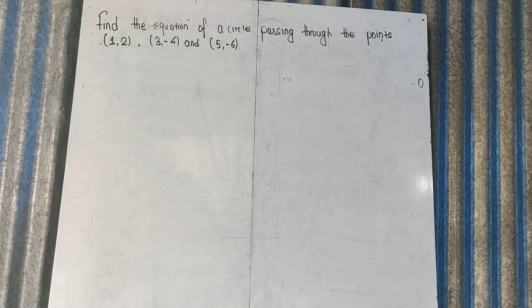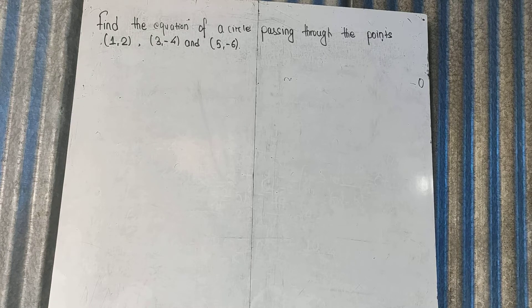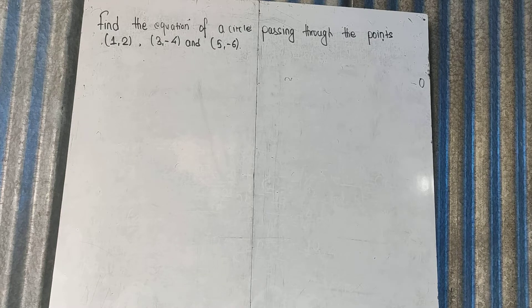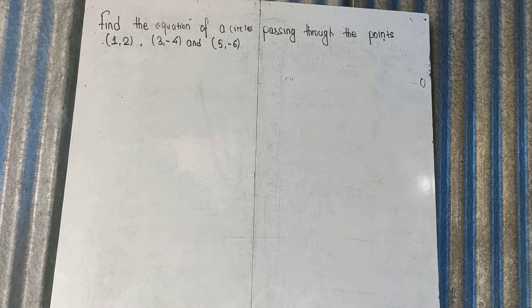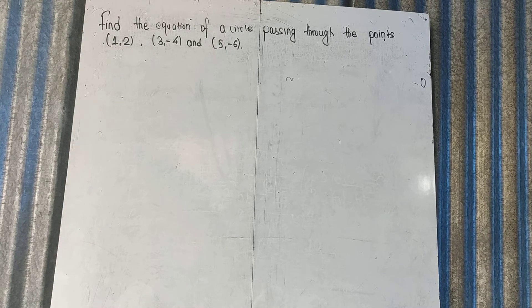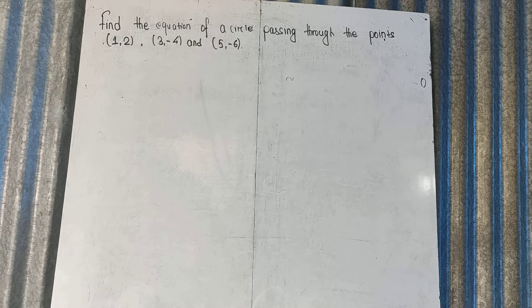Today's class can be a little longer because the question itself is quite time consuming. Here we have to find the equation of a circle that passes through the points (1, 2), (3, -4), and (5, -6). To find the equation of the circle we need two things at least: the center and the radius. So our first work is to find the center and the radius of the circle.